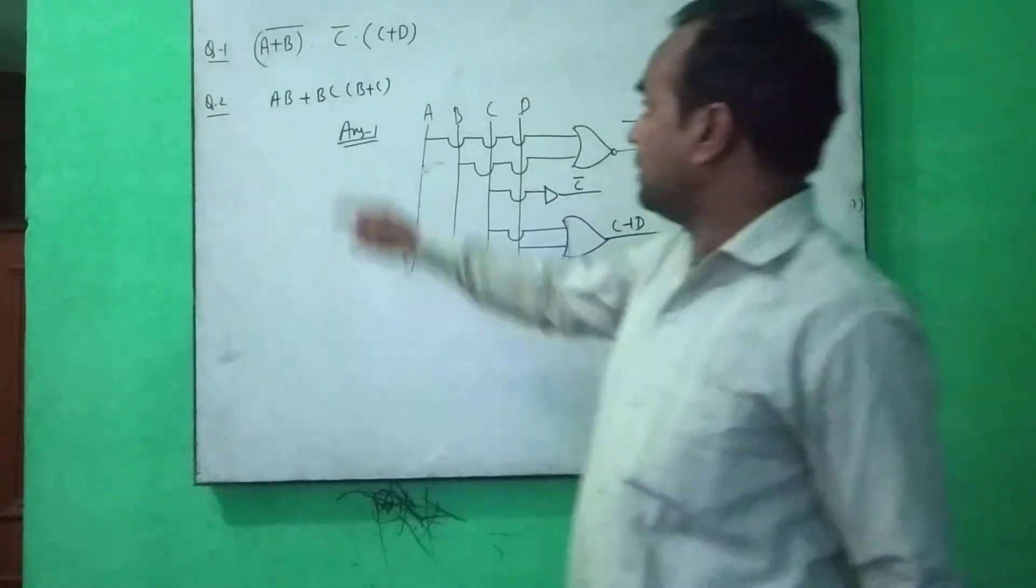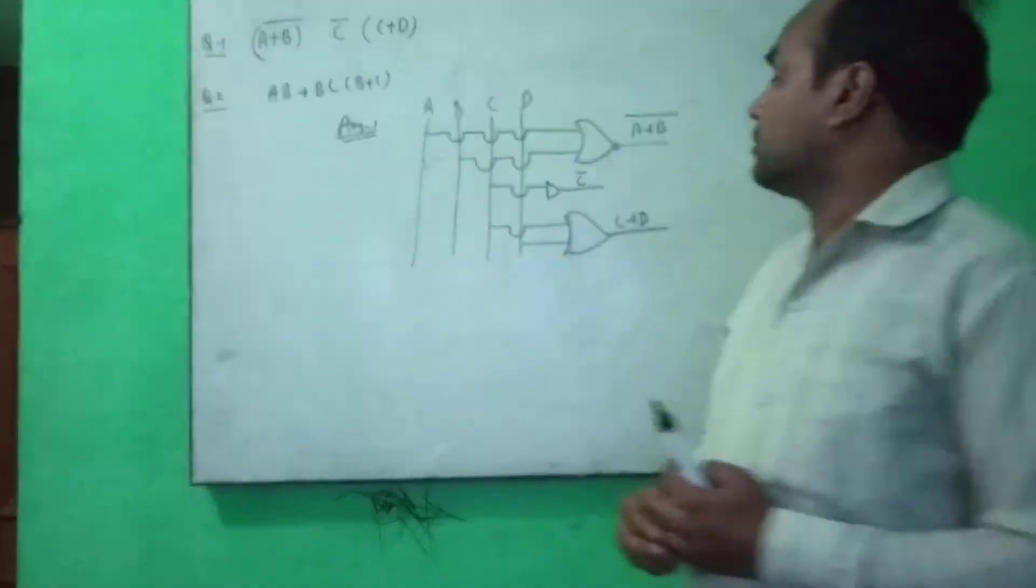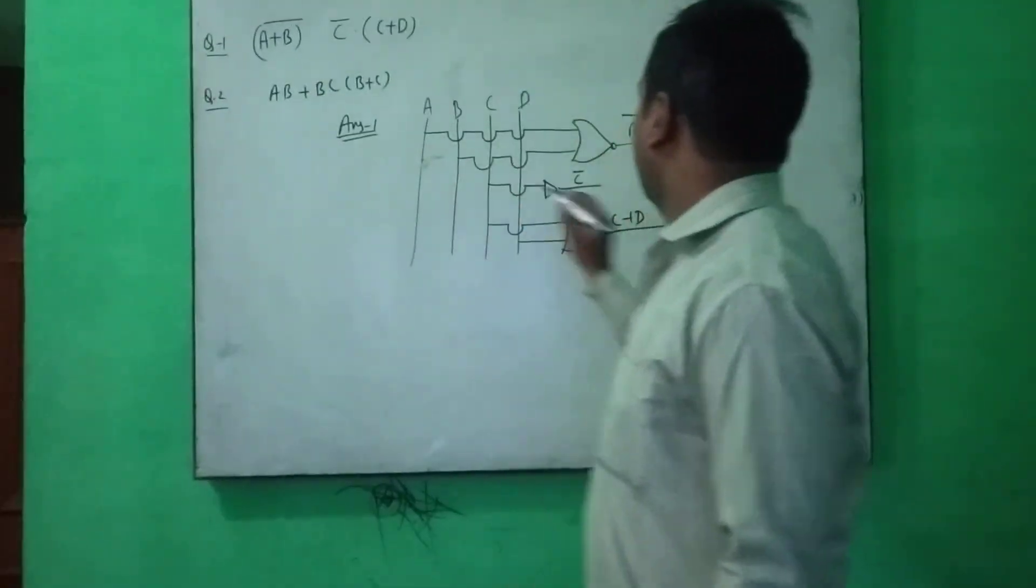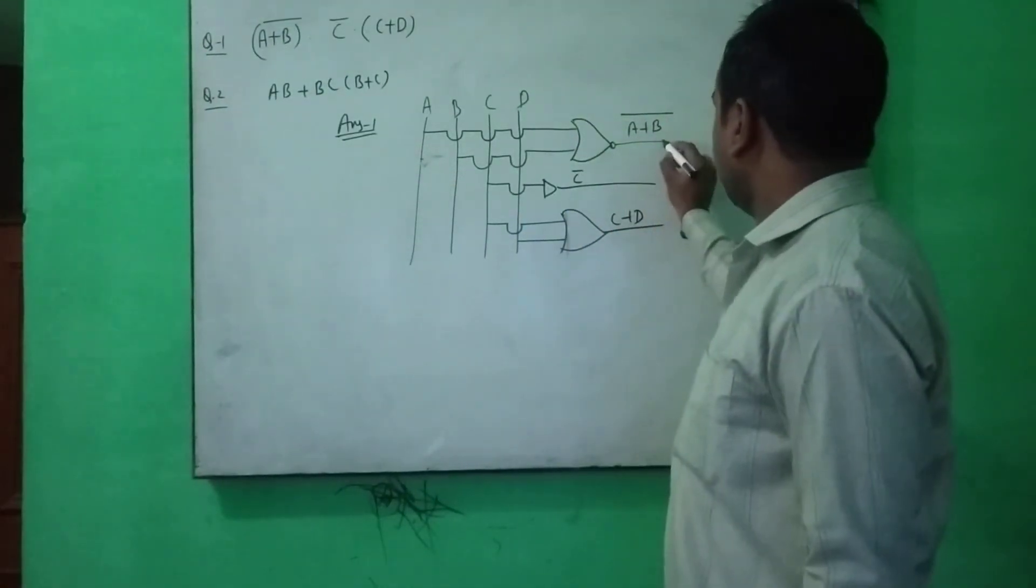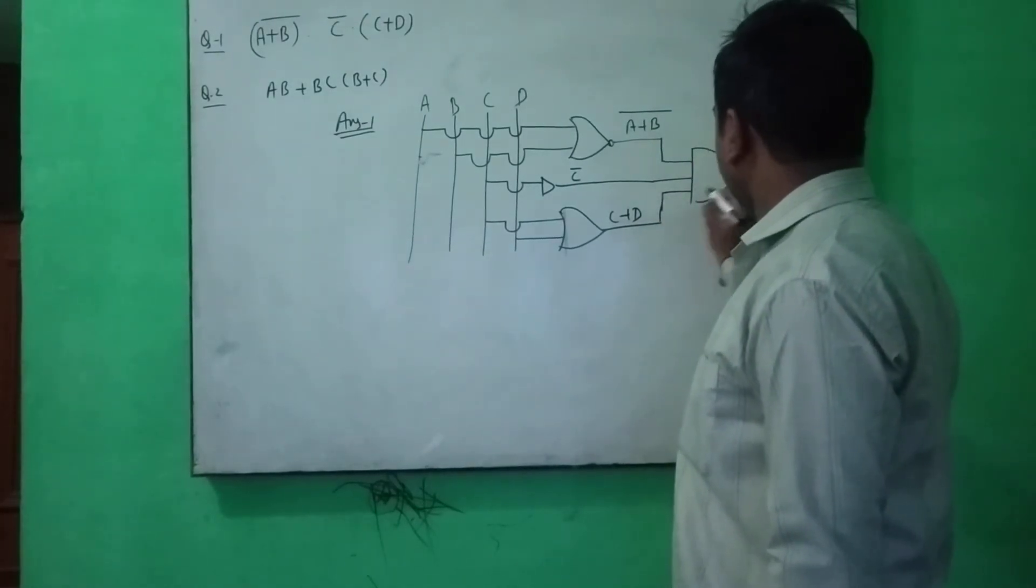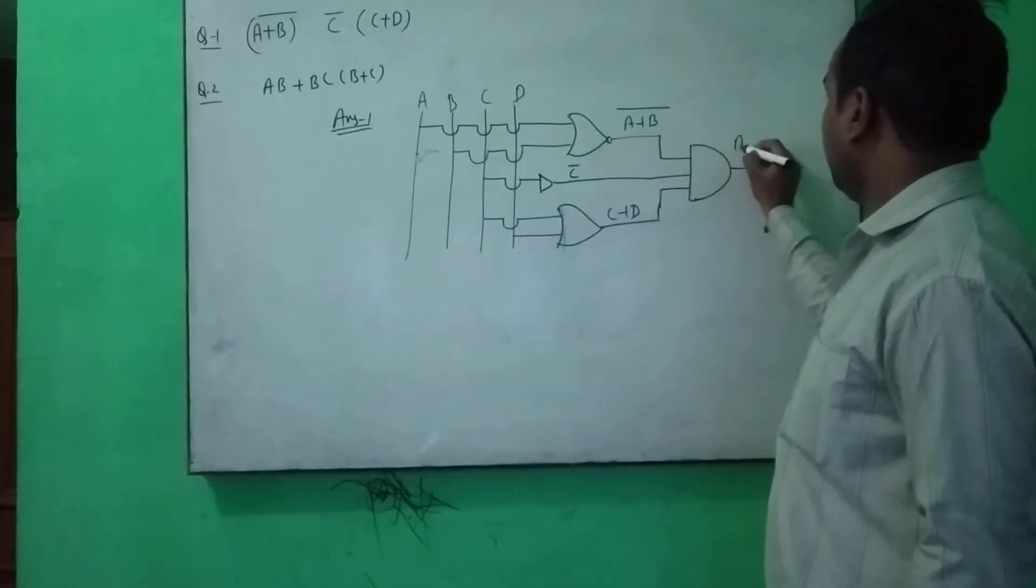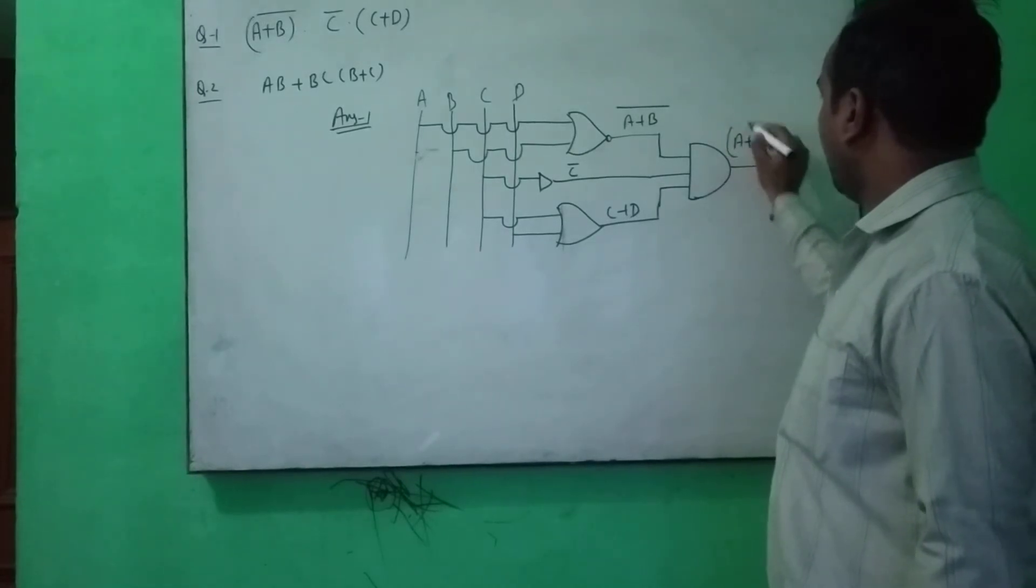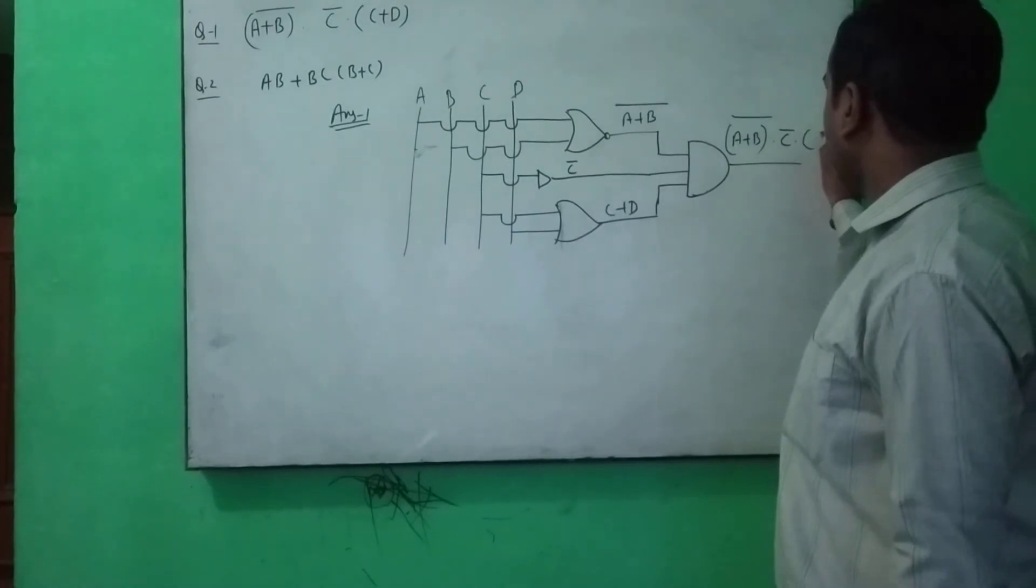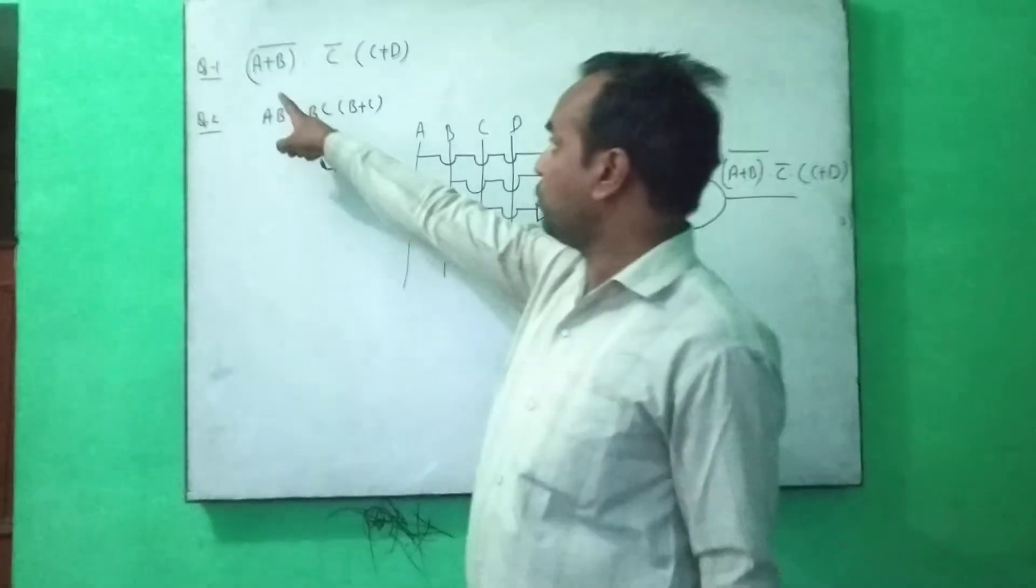Now, you are seeing here this is dot, this is dot. This is dot means AND gate will be performed. AND gate, we are having three inputs here. AND gate here. Then, finally we will get A plus B NOR dot C bar dot C plus D. This is the right answer. This is the right answer of question 1.